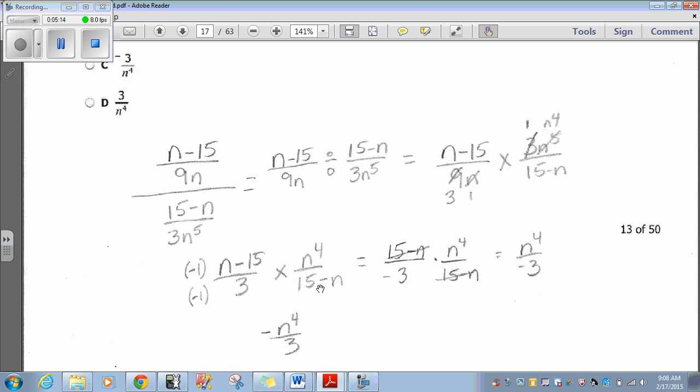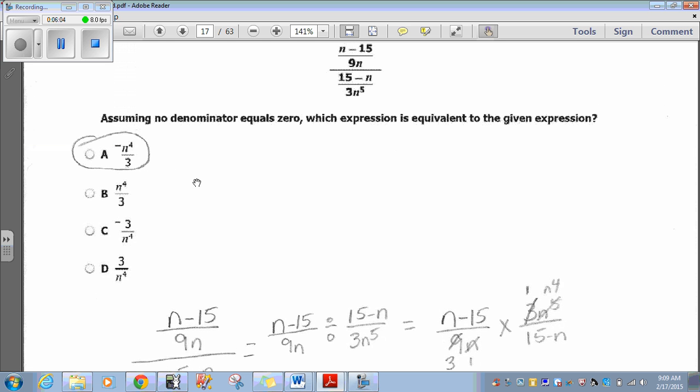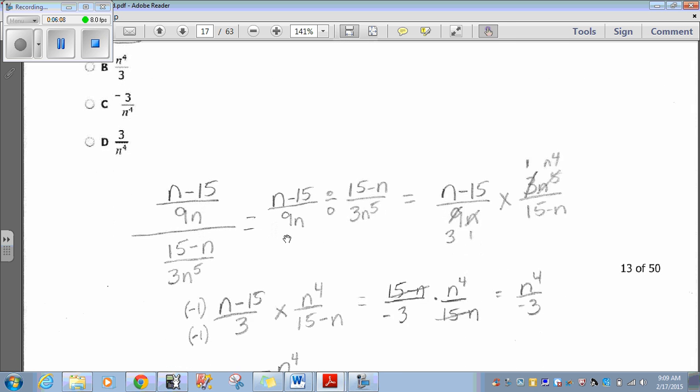So, what we have is n minus 15 over 3 times n to the 4th over 15 minus n. Now, if you remember, this is from rational expressions unit 6. Multiply this first fraction by negative 1 over negative 1, which is really just 1, because this will change from n minus 15 to 15 minus n. Why? Because negative 1 times n is negative n. Negative 1 times 15 is positive 15. So, that's 15 minus n over negative 3. Then, if we multiply 15 minus n over negative 3 times n to the 4th over 15 minus n. Well, these two 15 minus n's cancel each other out, leaving us n to the 4th over negative 3. The only one that fits that is choice A. I like that one.